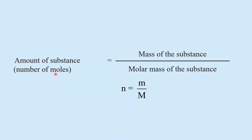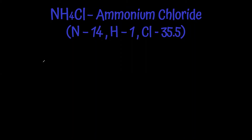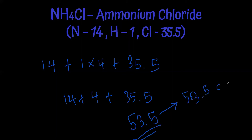The amount of substance, meaning the number of moles, is equal to the mass of the substance divided by the molar mass of the substance. Let's apply this: ammonium chloride NH4Cl — first find the relative molecular mass: nitrogen (14) + 4 hydrogen atoms (1×4 = 4) + chlorine (35.5) = 14 + 4 + 35.5 = 53.5. Therefore the molar mass of ammonium chloride is 53.5 g mol⁻¹.